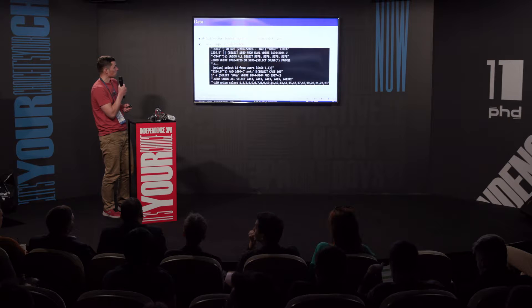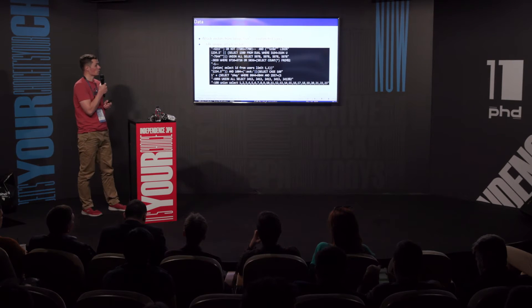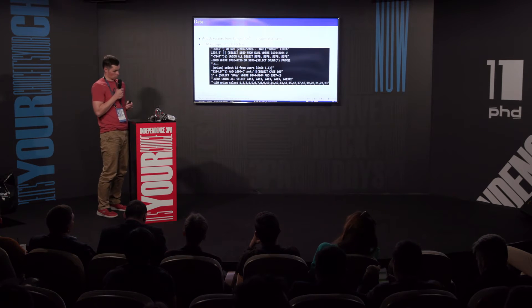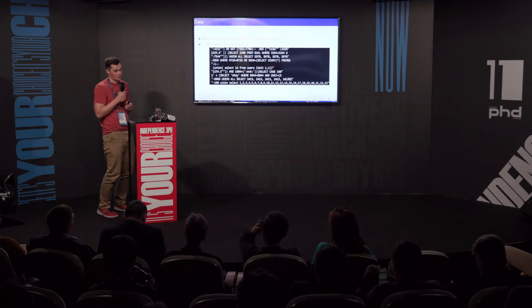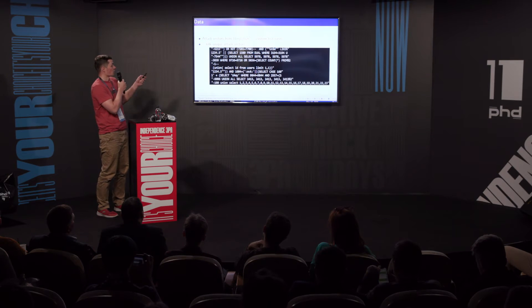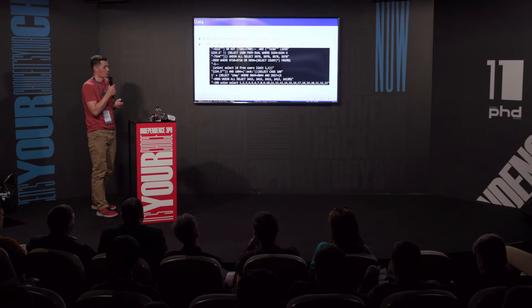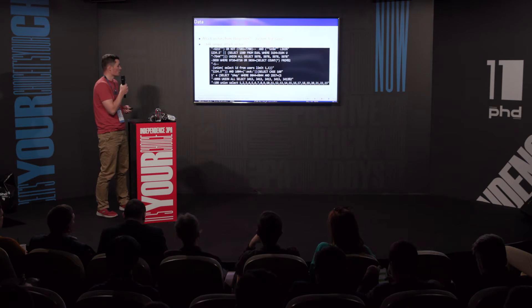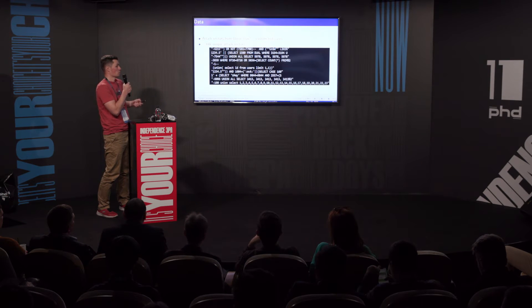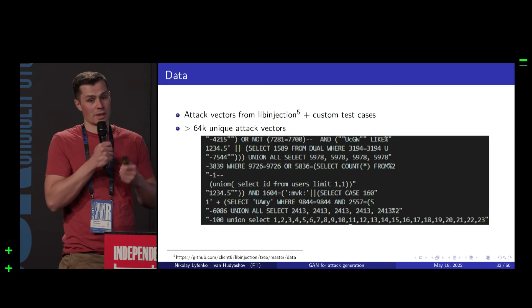The discriminator helps us distinguish real data samples from synthesized samples. The generator is trained to map noise samples to synthetic data samples that can fool the discriminator. They always rival each other. We took vectors of web attacks from web injection datasets, added some custom cases using our own expertise. There were approximately 64,000 unique attack vectors, and we put them inside GAN.